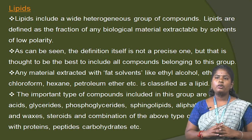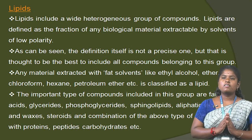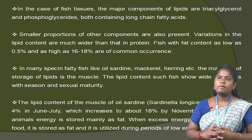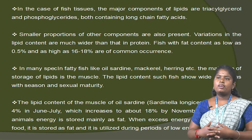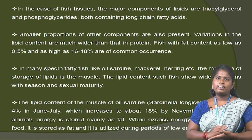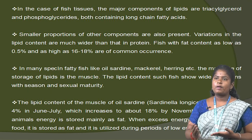The important types of compounds included in this group are fatty acids, glycerides, phosphoglycerides, sphingolipids, aliphatic alcohols and waxes, steroids and combinations of the above types with proteins, peptides and carbohydrates. In the case of fish tissue, the major components of lipids are triglycerides and phosphoglycerides, both containing long-chain fatty acids. Smaller proportions of other components are also present.